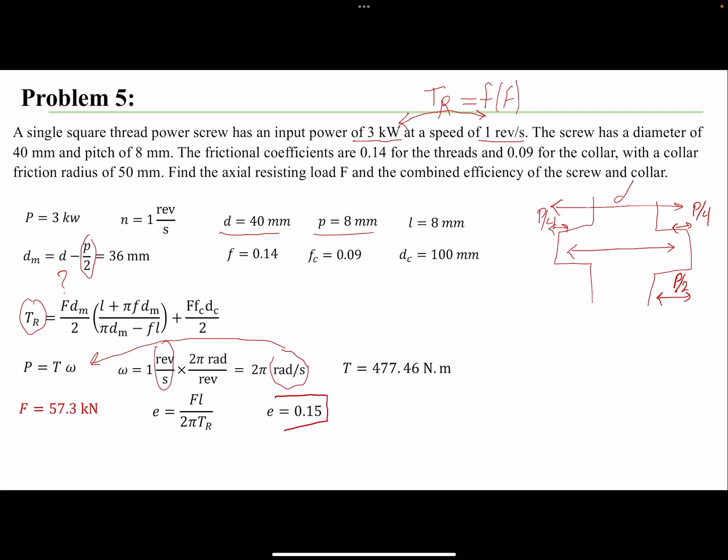As we expected, the efficiency is pretty low, mainly because of these values—that's a very high value of friction. We also have a collar, which contributes to the additional TR.